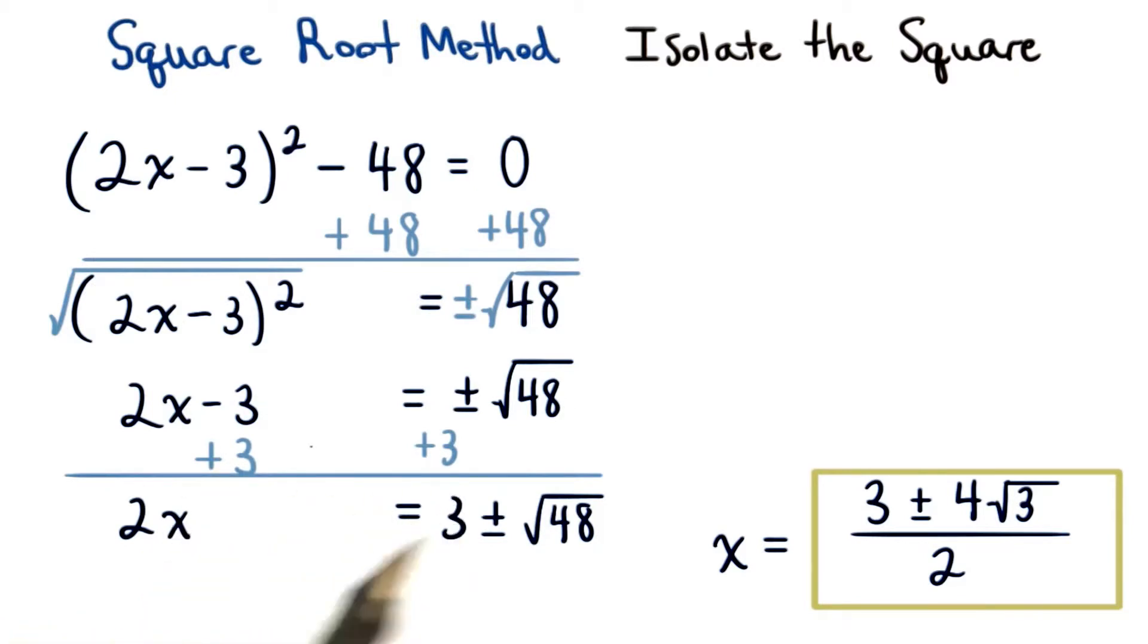We add 3 to both sides to isolate our 2x, and then we divide both sides by 2, this coefficient.